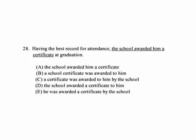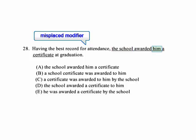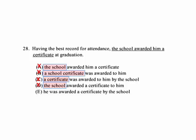Number 28. 'Having the best record for attendance, the school awarded him a certificate at graduation.' Here we have a misplaced modifier. 'Having the best record for attendance' is incorrectly modifying 'the school.' Since we're talking about him being awarded a certificate, he's the one who has the best record for attendance. The only answer choice where 'he' is correctly placed to be modified by the phrase is E: 'Having the best record for attendance, he was awarded a certificate by the school.' Remember to place your modifiers correctly.